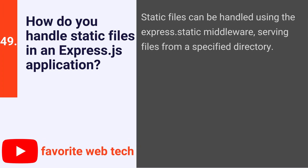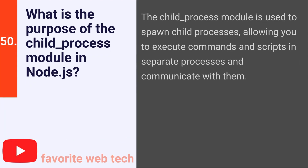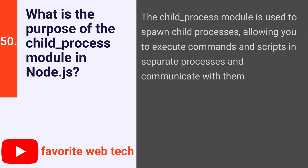What is the cluster module in Node.js? The cluster module allows you to create child processes, called workers, that share the same server port, enabling load balancing across multiple CPU cores. How do you handle static files in an Express.js application? Static files can be handled using the express.static middleware, serving files from a specified directory. What is the purpose of the child_process module in Node.js? The child_process module is used to spawn child processes, allowing you to execute commands and scripts in separate processes and communicate with them.